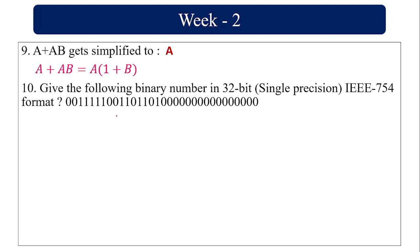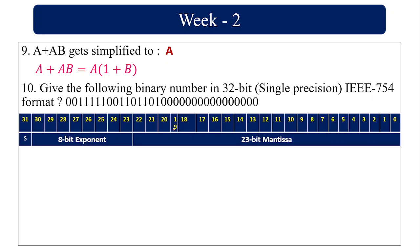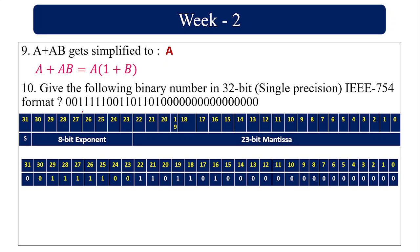Give the following binary number in 32-bit IEEE 754 format. Using the same procedure as problem 4 — 1 bit for sign, 8 bits for exponent, 23 bits for mantissa — substitute the value and find the result in reverse order. The value is 2.31 into 10 power minus 1.